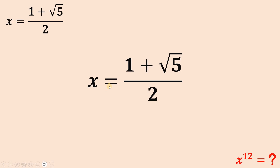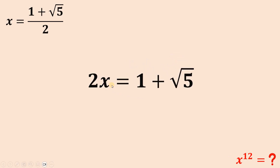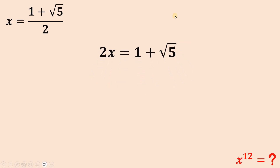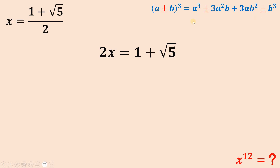First, let's multiply both sides by 2. And then let's focus on this — we only need two identities. The first one is when we expand a plus or minus b raised to the power of 3, we get a cubed plus or minus 3a squared b plus 3ab squared plus or minus b cubed. Another identity is when we expand a plus or minus b raised to the power of 2, which gives us a squared plus or minus 2ab plus b squared.